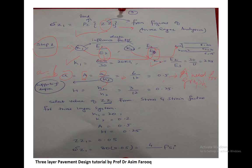We also need to determine the height ratio H, where H equals H1 divided by H2. H1 is 3 inches divided by 12, which gives 0.25. So now we have all parameters: K1 equals 20, K2 equals 2, A equals 0.5, and H equals 0.25. We are ready to select the value of ZZ1 from the chart.